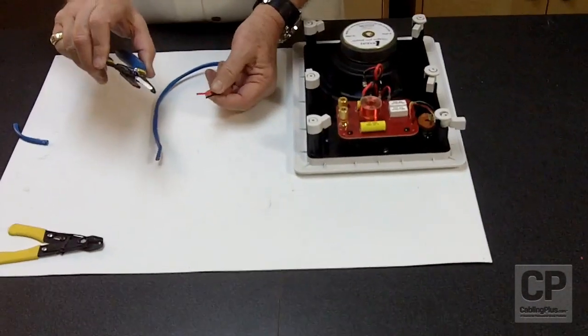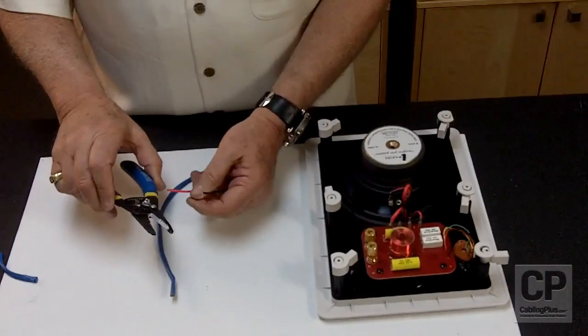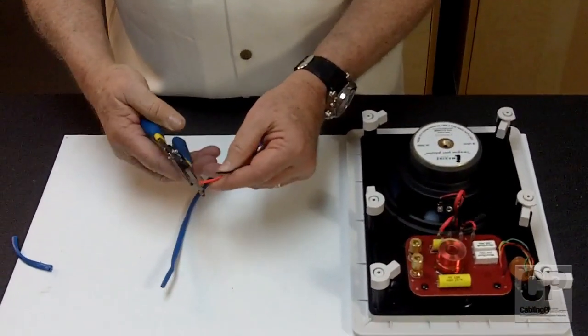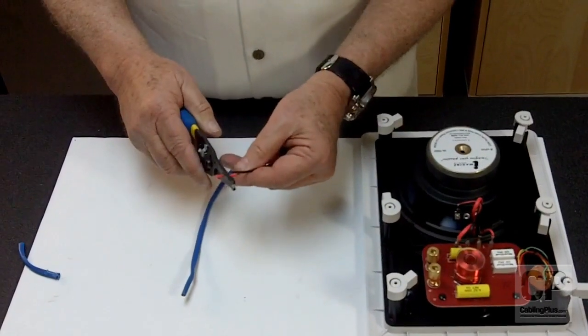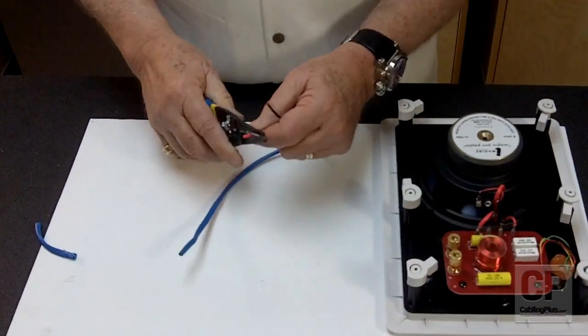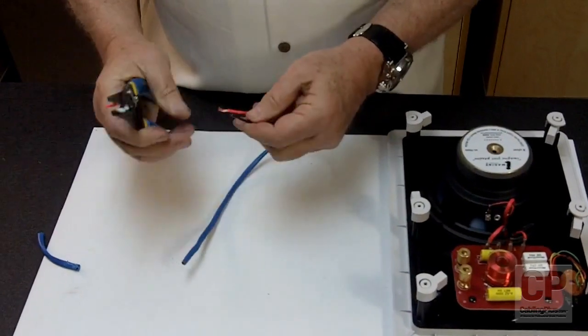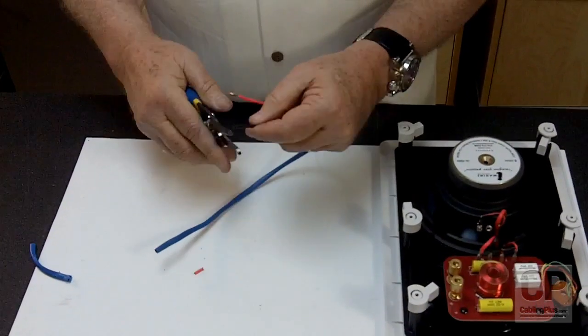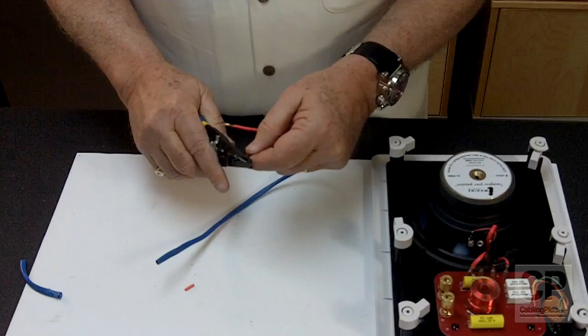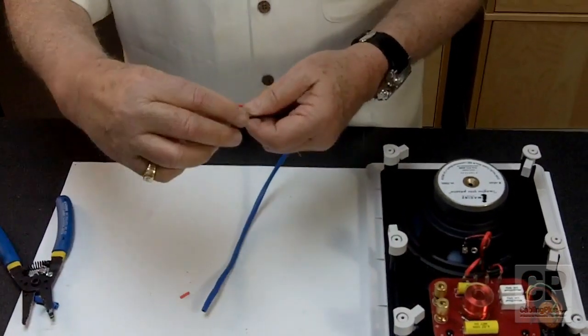So first thing I'm going to do is I'm going to look at my particular stripper and select the slot that says 14 gauge, simply put it in there and I'm going to peel off probably about a half inch of jacket on both the red and the black and this is going to expose my 105 strands of cable.